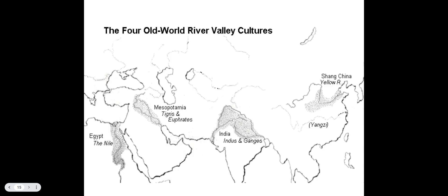Hopefully this explanation of the features of civilization will help you understand the four old world river valley civilizations we're going to cover: Mesopotamia, with the Tigris and Euphrates rivers; Egypt, with the Nile; India, with the Indus and Ganges rivers; and China, with the Shang Yellow River. Keep these features of civilization in mind as we study these cultures. Make sure you complete your note sheet and re-watch the video if needed. If you have any questions, let me know in class.